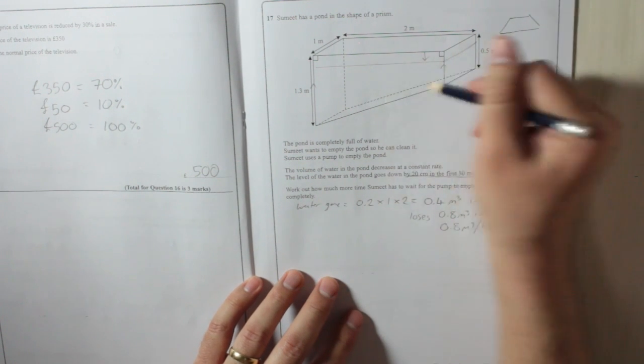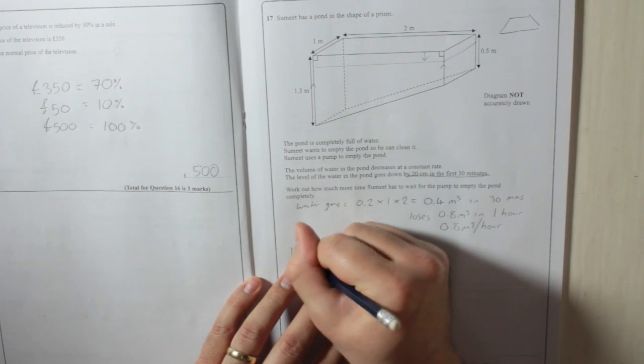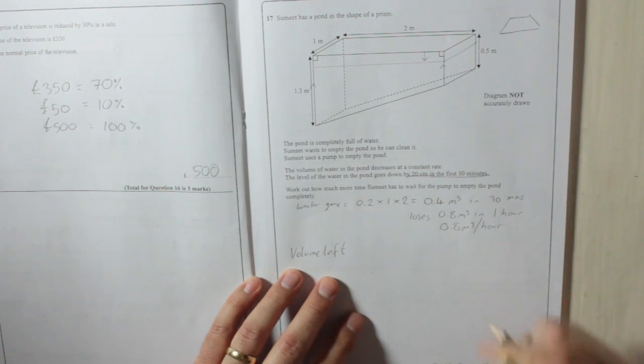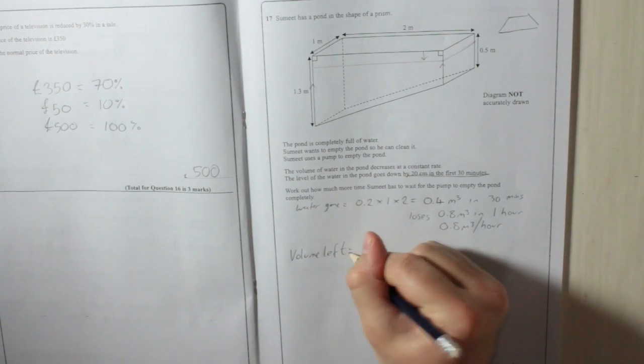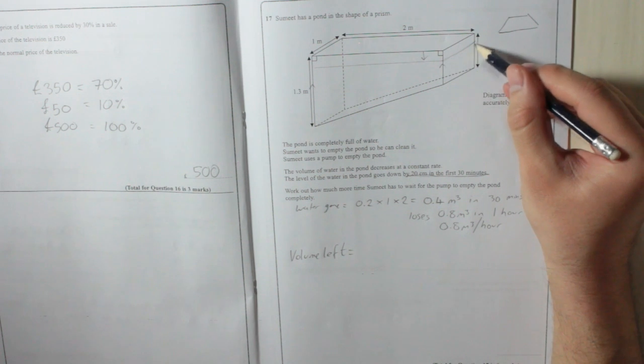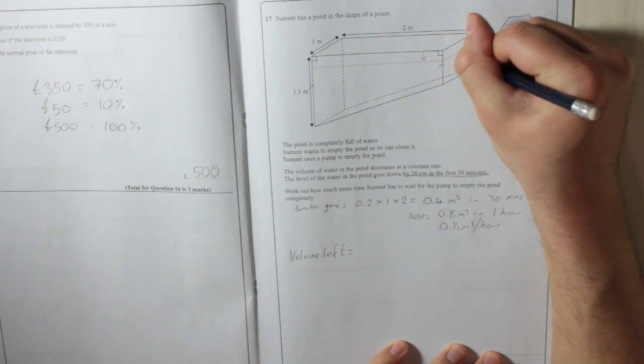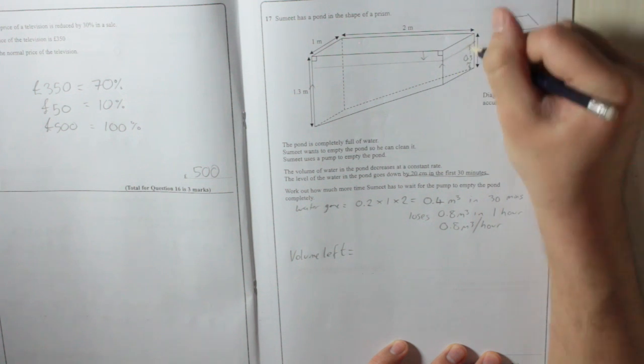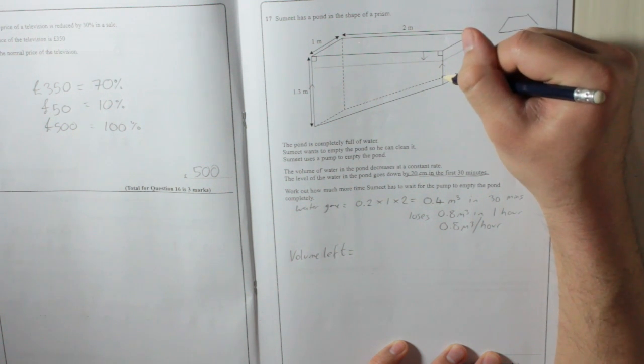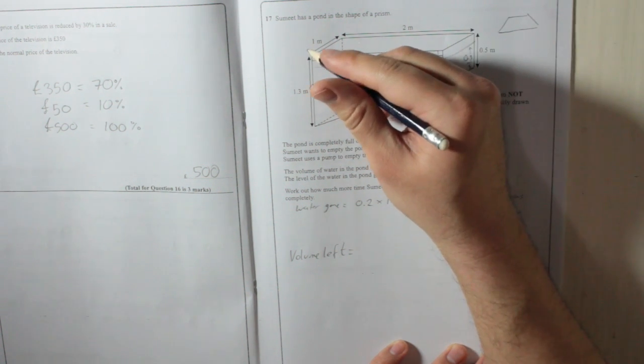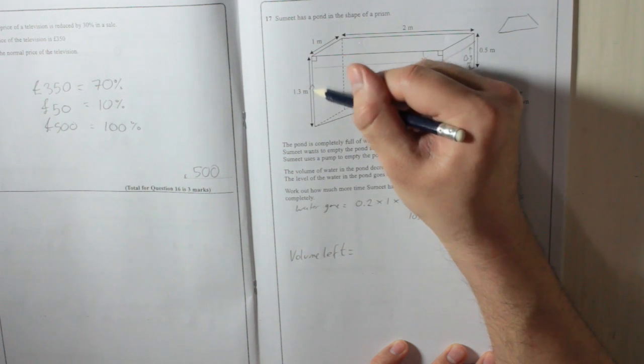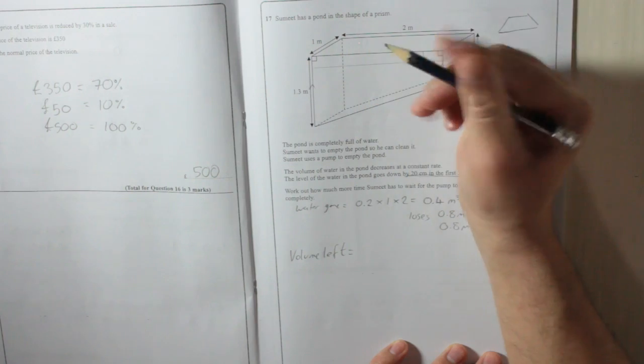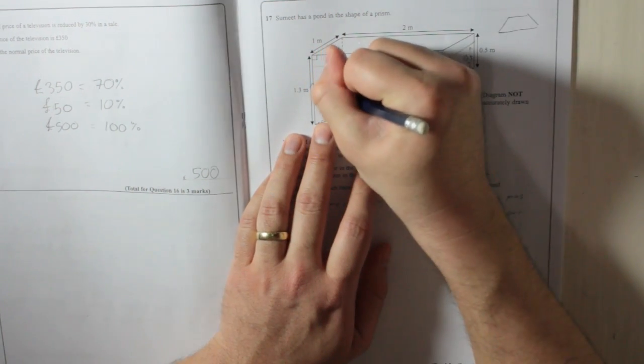Now I'm going to work out what is left of the volume. Volume left in the pond. You can see it's gone down to here, so that means you've got 0.3 meters on that end. And over here, because it was 1.3 and you've lost 20 centimeters, it's going to be 1.1 meters.